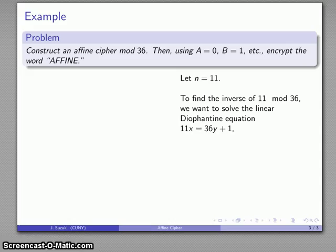So that's going to require us to solve a linear diophantine equation: 11x equals 36y plus 1. And if I solve that, I get x equals 23, y equals 7 as a solution. Now I don't actually care about the value of y. What I do need is x equals 23 is our inverse of 11 mod 36.